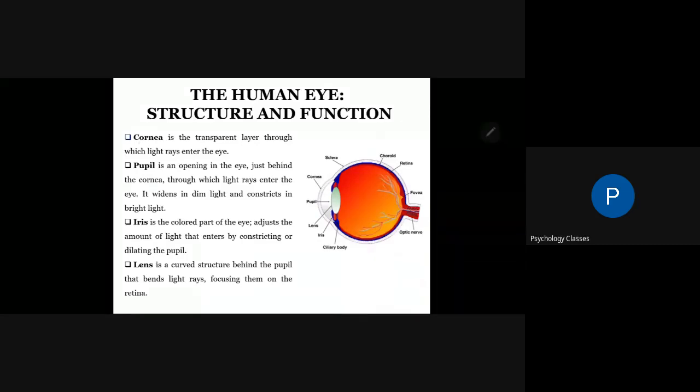Now, cornea. Firstly, we will start with cornea. Cornea is the transparent layer through which light rays enter the eye. So it enters through this transparent layer. This is the first thing where our light enters the eye.